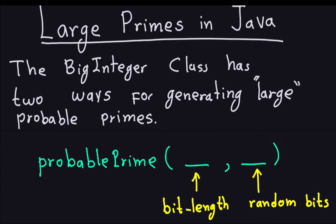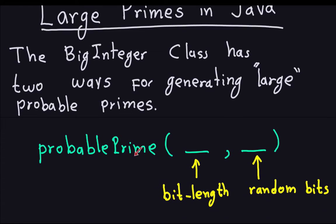One method is the probablePrime method. This probable prime will generate a possible prime number according to some probability. It has two inputs: one is the bit length — in other words, how big you want the probable prime to be. For cryptographic applications you want at least 1024 bits. The other input is some random bits, and the method will start checking from those random bits if it is a probable prime or not. This will always give you a number which is a probable prime according to some probability.